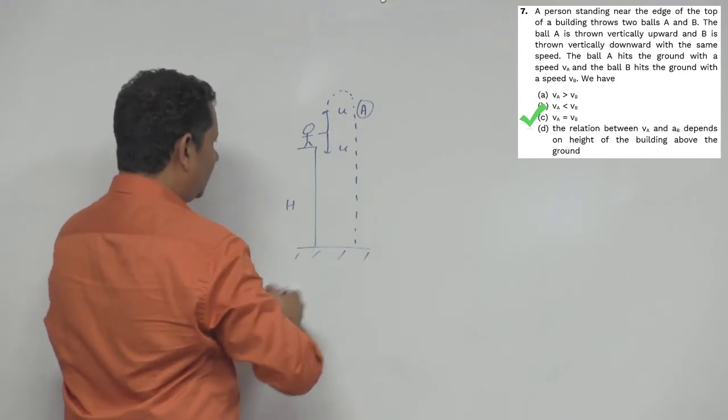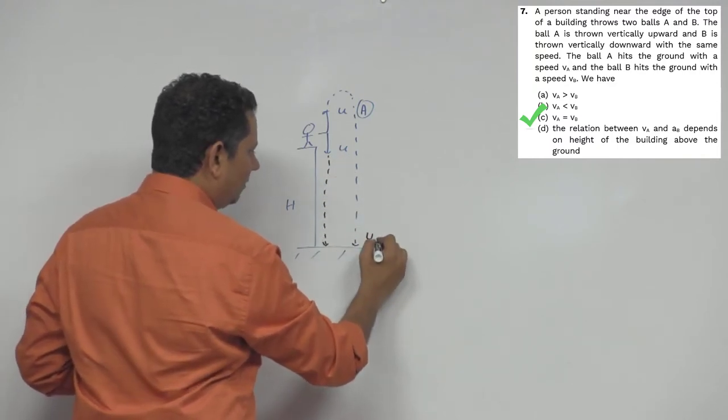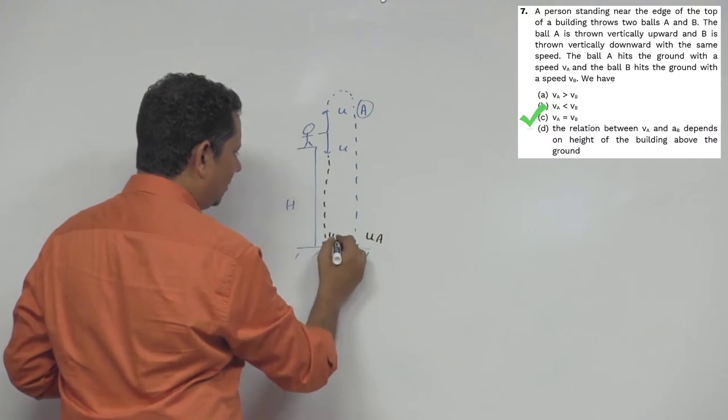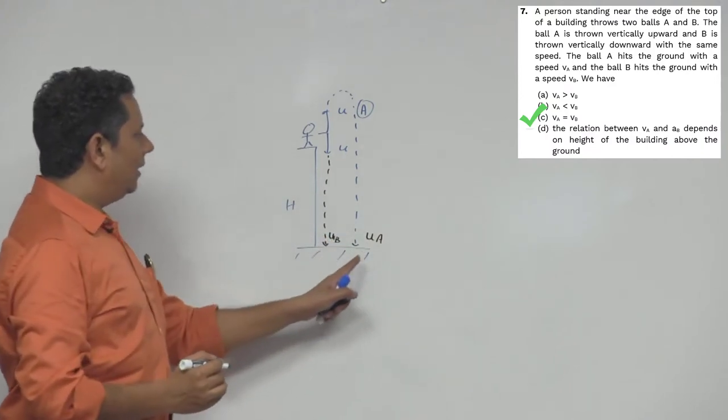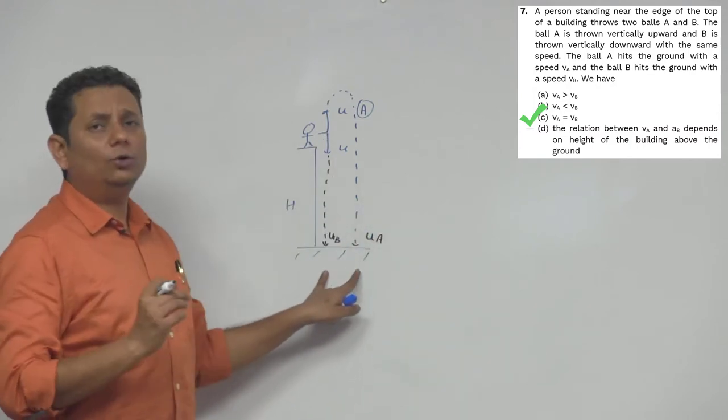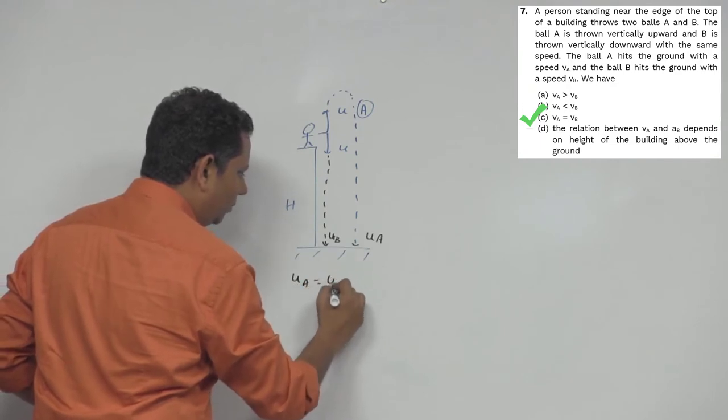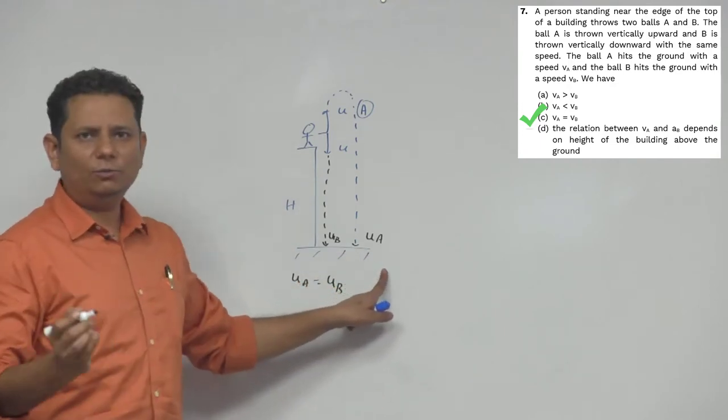The ball that was thrown downward, let's draw it with a different color pen. It hits here. Its velocity is ua, this one's velocity is ub as per the question. Now we have to compare these two. In this case, the velocity of both when they hit will be equal - ua will be equal to ub.